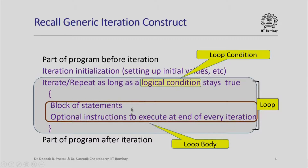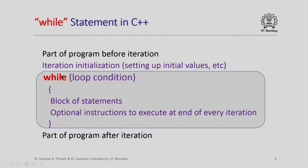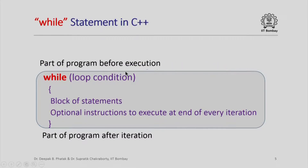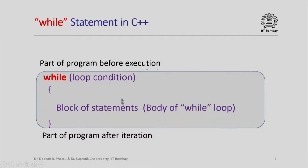In C++ we can implement this using the while construct as follows: while loop condition, block of statements. The optional instructions to be executed at the end of every iteration can be grouped with this block of statements. Similarly, the initialization part can be grouped with the part of the program before the iteration. So we have a part of the program before execution of the loop, the while loop itself — whose body includes both the block of statements and end-of-iteration statements — and then the part of the program after the while loop.